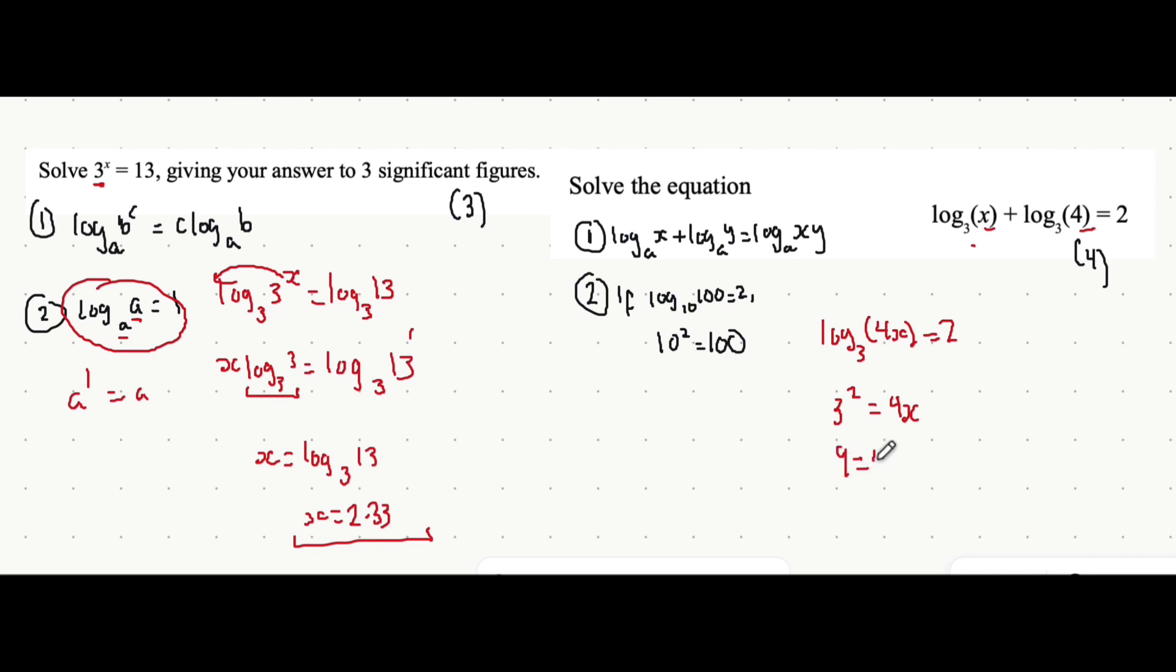3 squared is 9, is equal to 4x. Divide both sides by 4, so x is 9 over 4. And that's it.